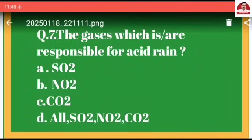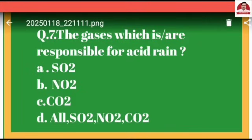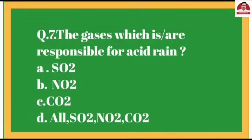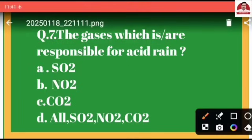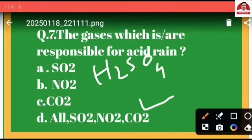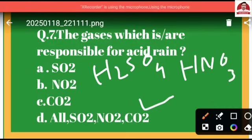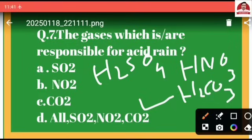Question number seven: The gases which are responsible for acid rain — option A: sulfur dioxide, option B: nitrogen dioxide, option C: carbon dioxide, option D: all of the above. The correct option is D, because all three gases form acids: sulfur dioxide produces H2SO4, nitrogen dioxide produces nitric acid HNO3, and carbon dioxide produces carbonic acid H2CO3.